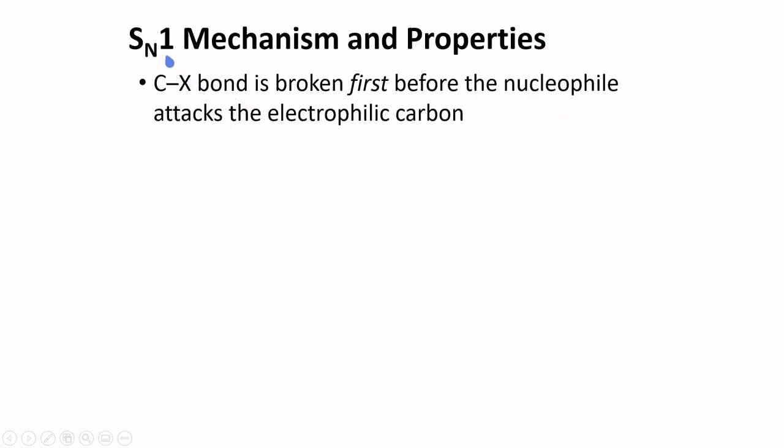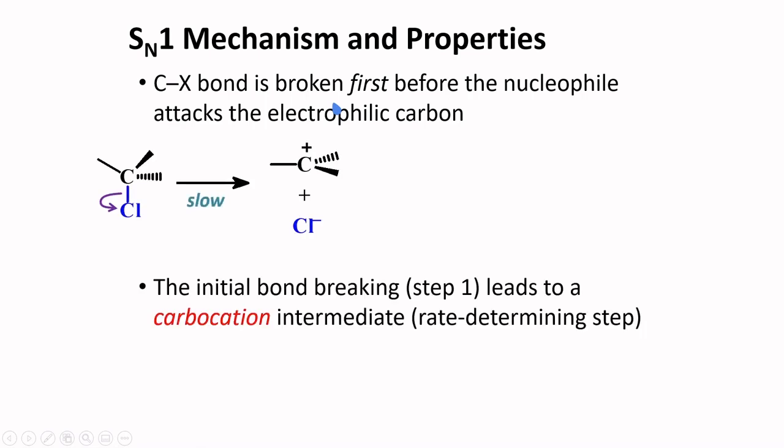One possible type of nucleophilic substitution is called SN1. Here, the C-X bond is broken first before the nucleophile attacks the electrophilic carbon. The initial bond-breaking step leads to a carbocation intermediate, and this part of the reaction is slow, and is considered the rate-determining step.